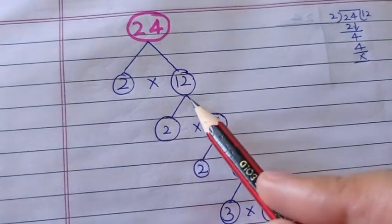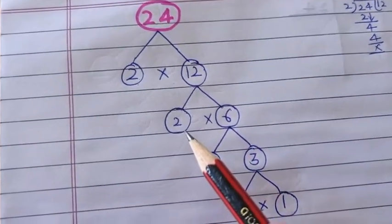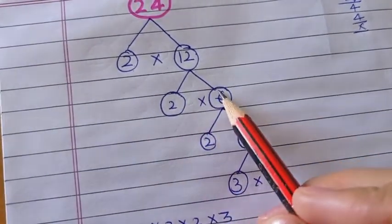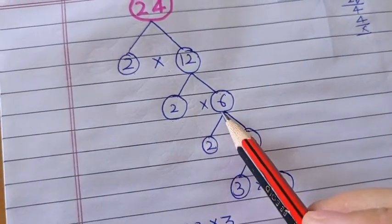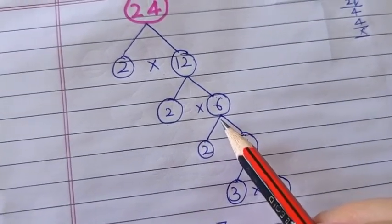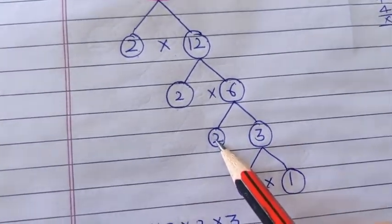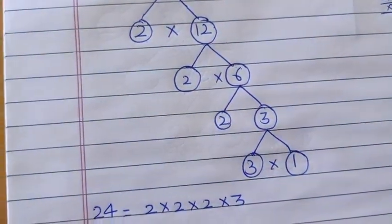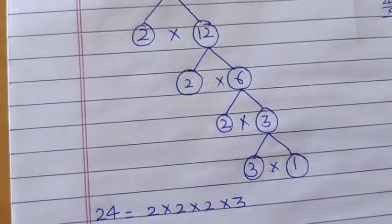2 × 12. In this way we will draw two lines, here we will write 2 and here 12. Now again we will check for 12. Can we divide by 2? If yes, then how we will write? Again we will draw these two lines and we will write 2 × 6. Now we will check for 6. Again we will check it for 2. Here 2 and 3. It means 2 × 3. We can write 6 in this way, 2 × 3.